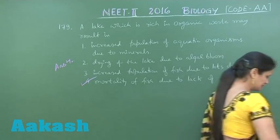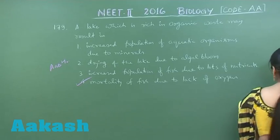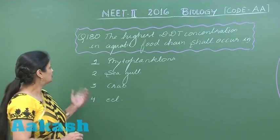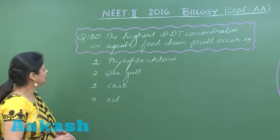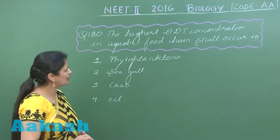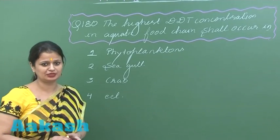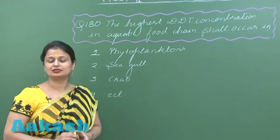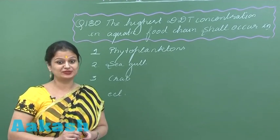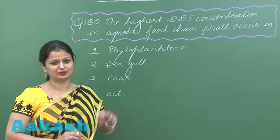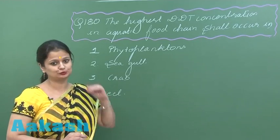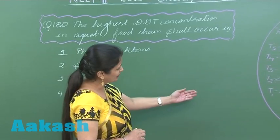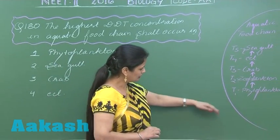Question number 180 is related to the biomagnification of DDT — there would be an increase in the concentration of DDT as we move from the lower trophic level to the higher trophic level. This is illustrated using the aquatic food chain shown here.